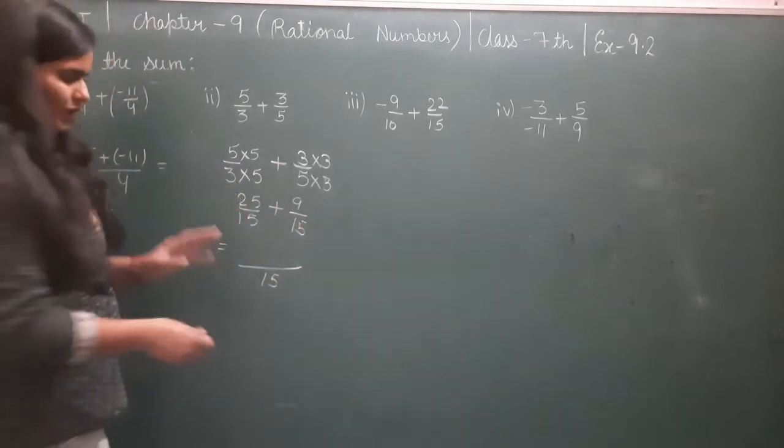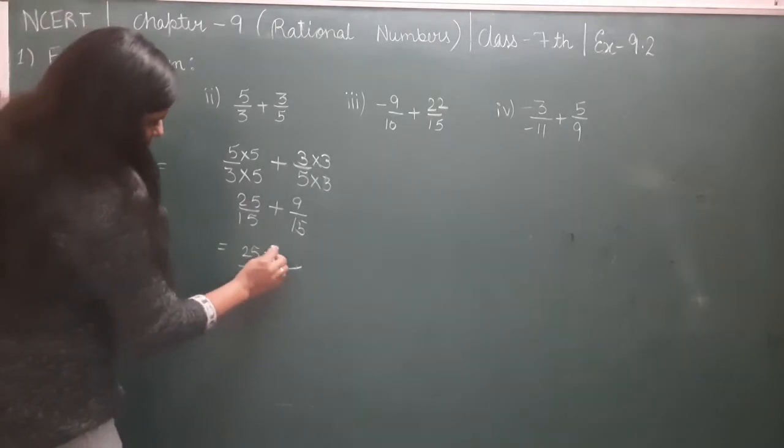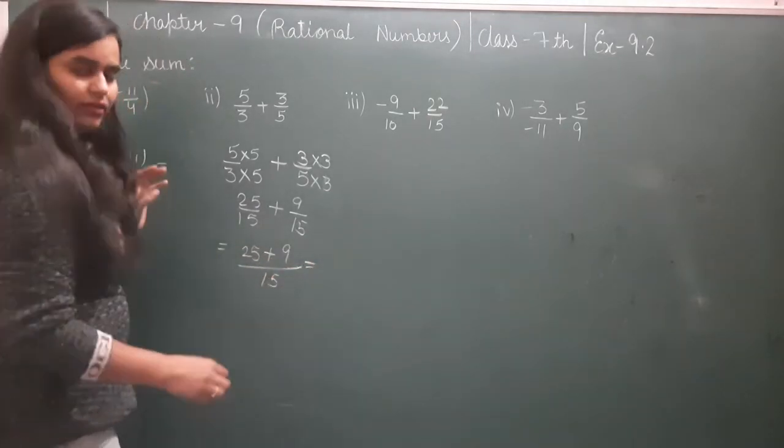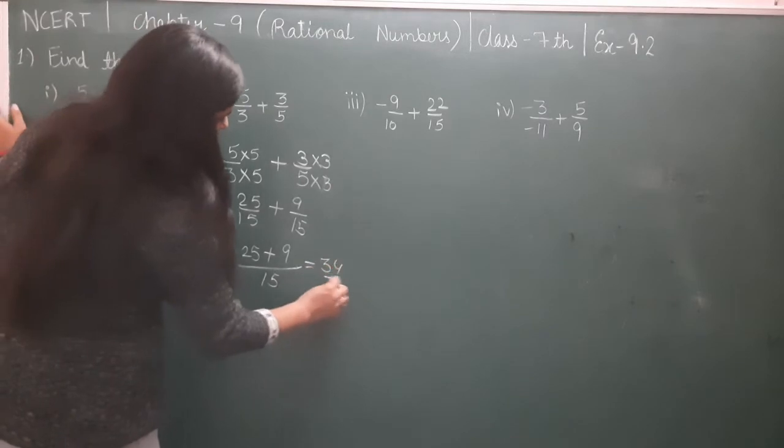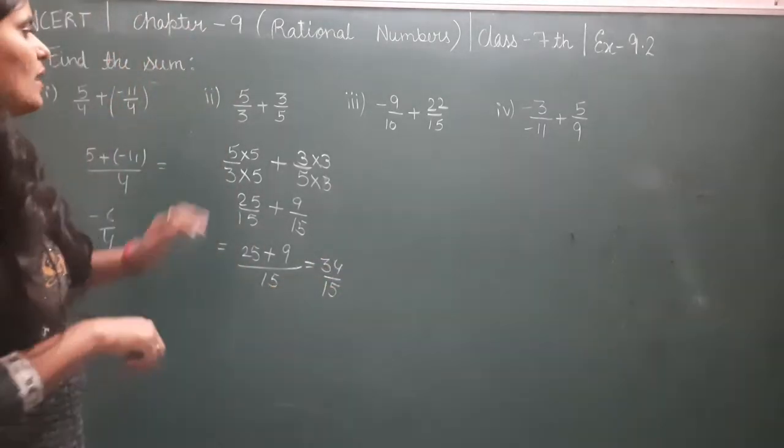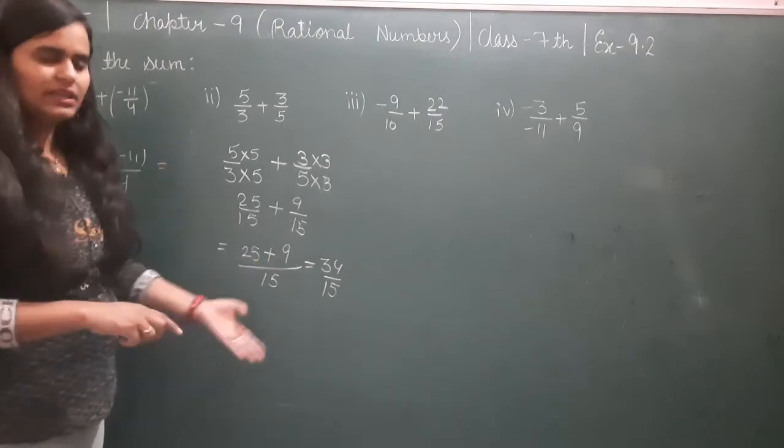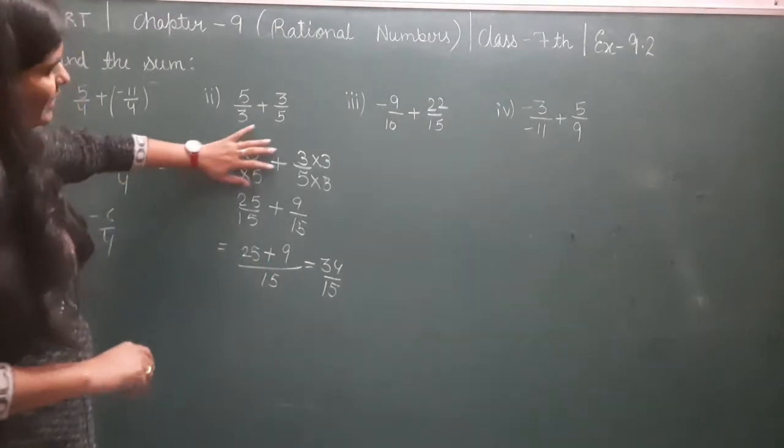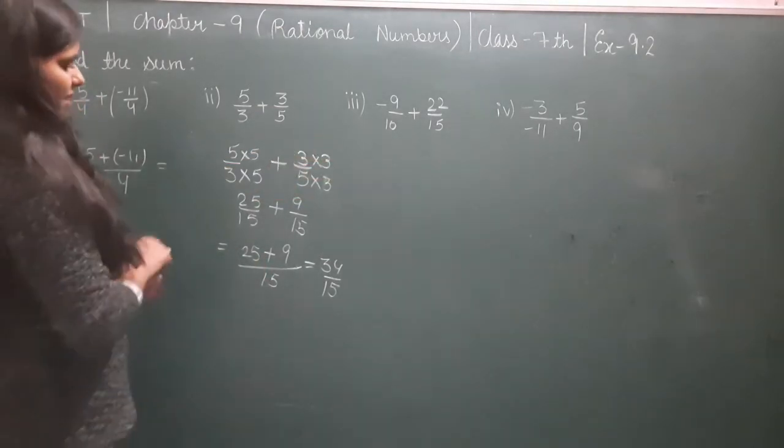When denominators are same, keep it as is and add the numerators, which equals 34/15. That's the first method. Now let's do the same sum using the second method. Next we won't use that one, we'll use this method directly.